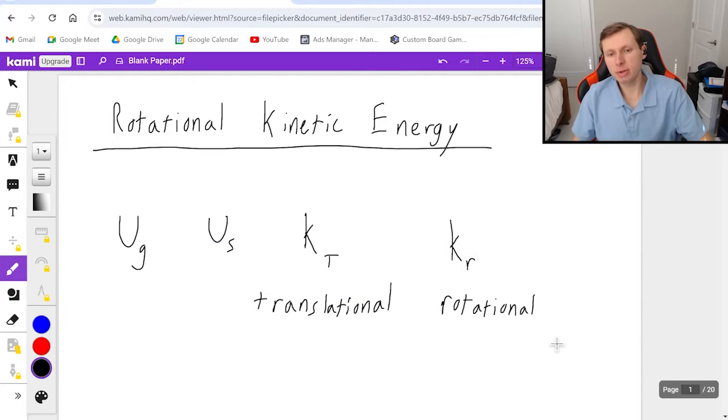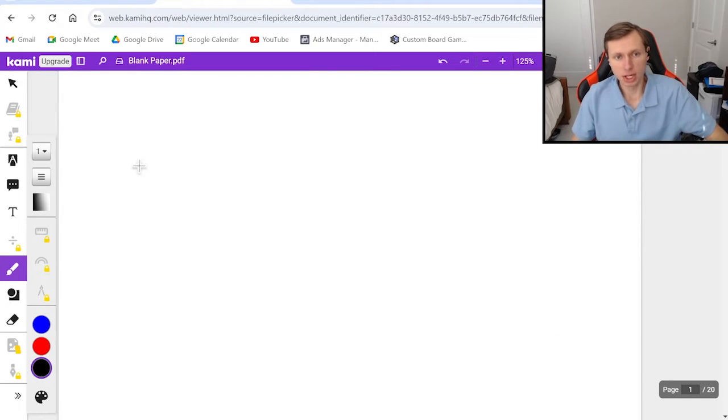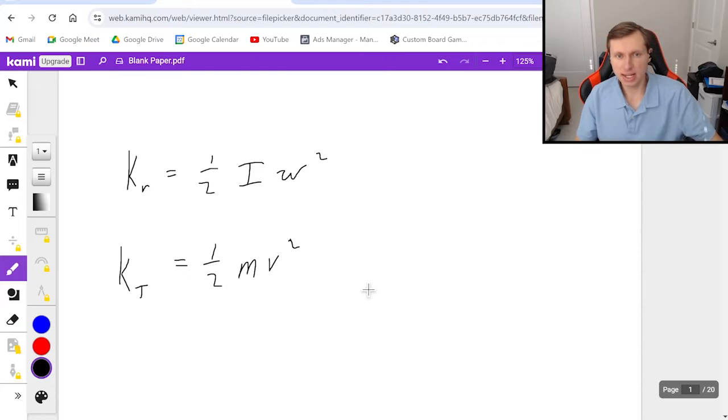First let me give you the equation for rotational kinetic energy. The equation is Kr equals one-half I omega squared. I is the moment of inertia. Sometimes they give you the moment of inertia, other times you have to solve for it. And then omega is the angular speed, and you're going to square that. It looks very similar to translational kinetic energy, which is one-half mv squared. That's because the variables basically match up. I is similar to mass, and omega is similar to velocity. Both of these things have the same units, joules.